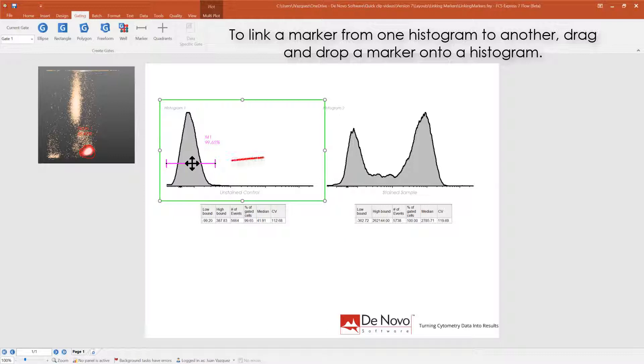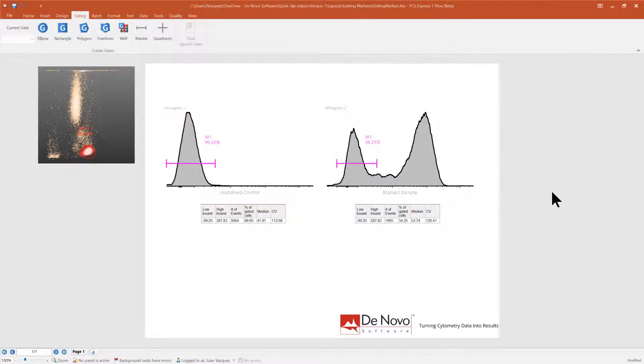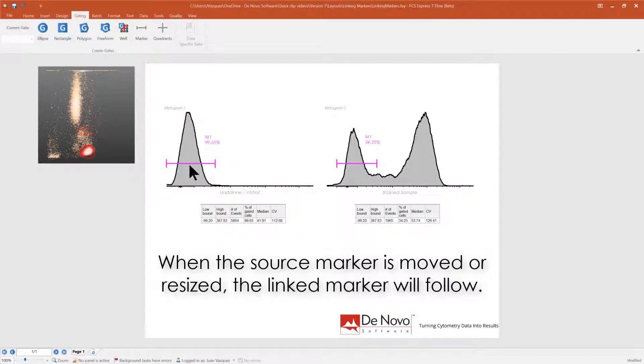To link a marker from one histogram to another, drag and drop a marker onto a histogram. When the source marker is moved or resized, the linked marker will follow.